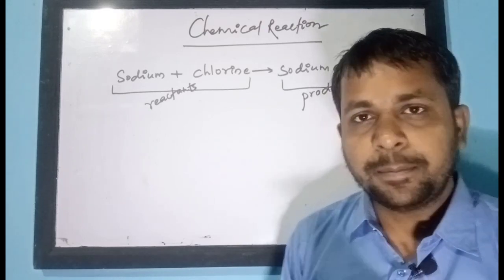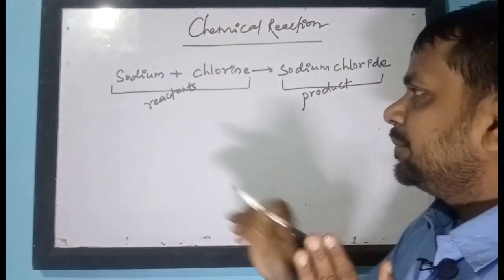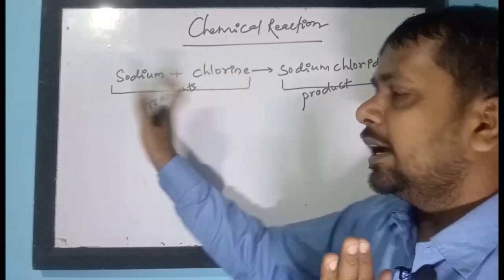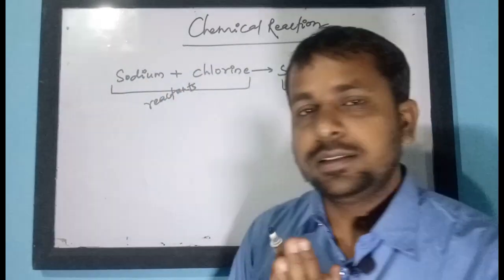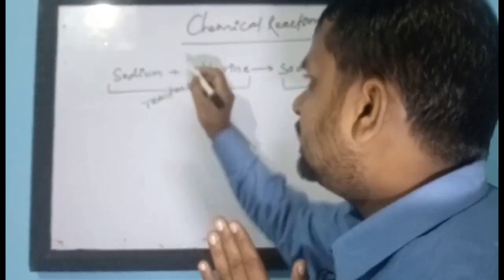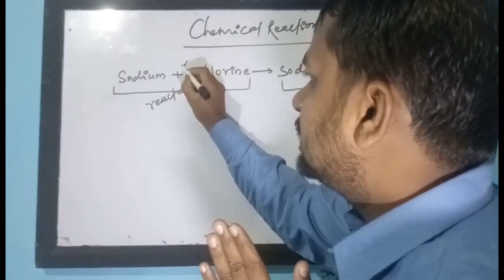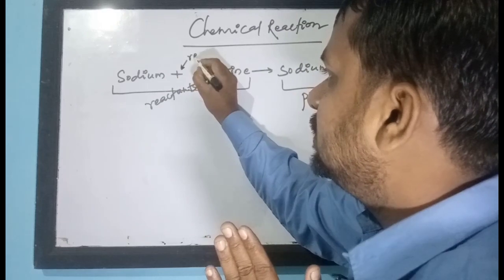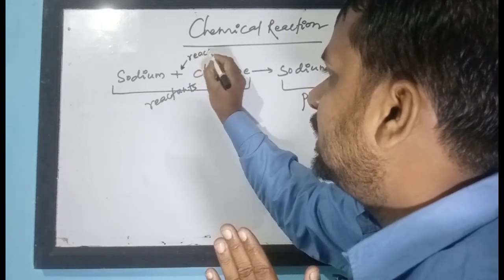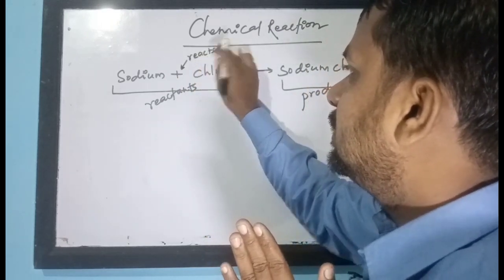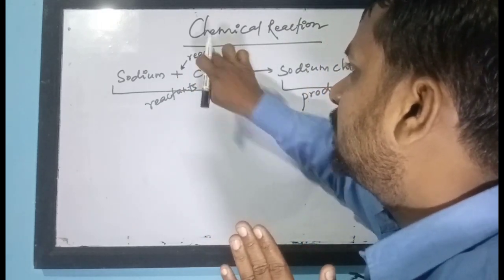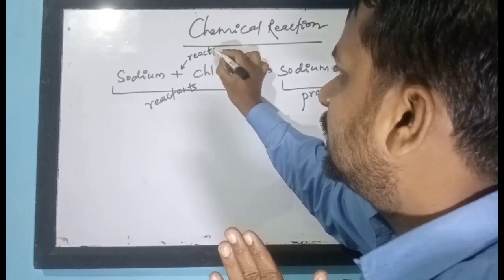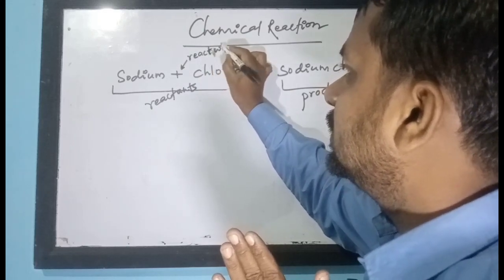The plus sign on the reactant side indicates 'react with.' The plus sign in a chemical equation means 'react with.'